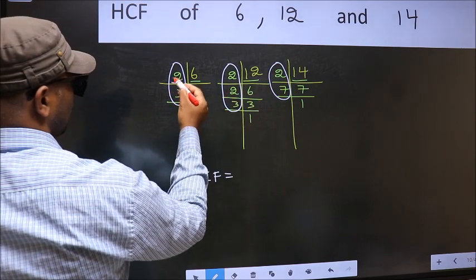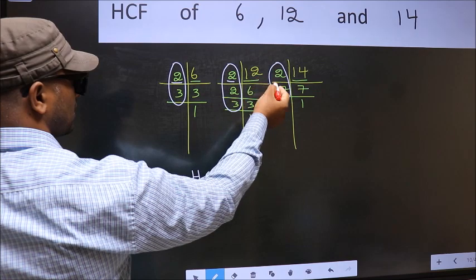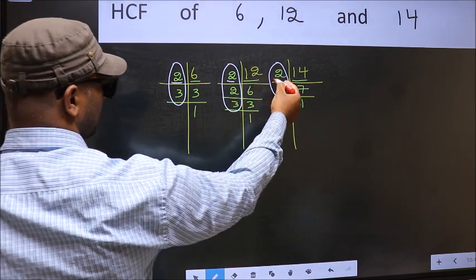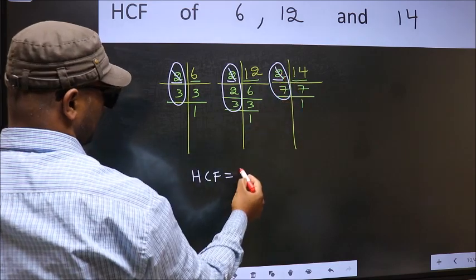Starting with the number 2. Do we have 2 here? Yes. So, go to the next place. Do we have 2 here? Yes. So, cut 2 right here.